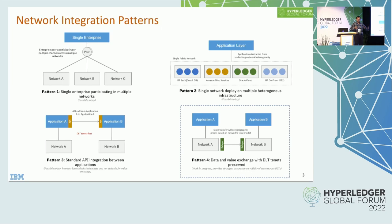Interoperability can range along a spectrum, and different kinds of solutions can be expressed in terms of the level of centralization or trust they require when trying to interlink two networks. If you look at the first pattern, you can imagine interoperation across different networks by having, say, multiple Fabric networks — composed of peers owned by different organizations — where a single organization participates in multiple networks and runs a peer with access to all the different networks' ledgers.